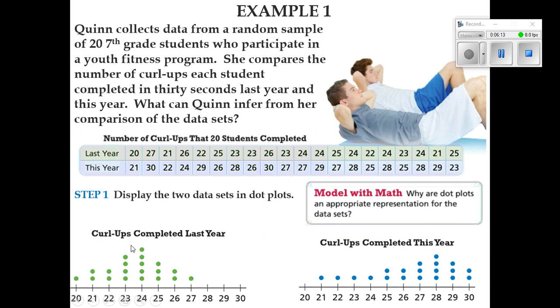What can Quinn infer from her comparison of the data? Well, if we look at all this data, that is a lot of data. First thing we're going to want to do is put it on order from the smallest number to the biggest number. So we're going to display the two sets of data on a dot plot and if we do, we'll see that the curl-ups that were done last year, there was one person to 20, two people to 21, and so on. And this year, we see that one person to 21, one person to 22, one person to 23, and then so on.